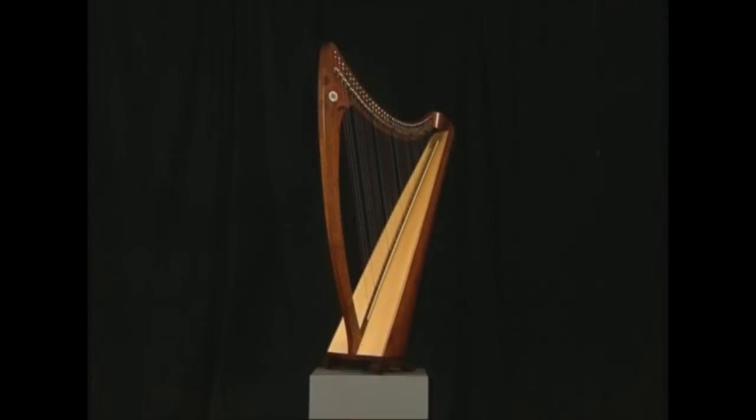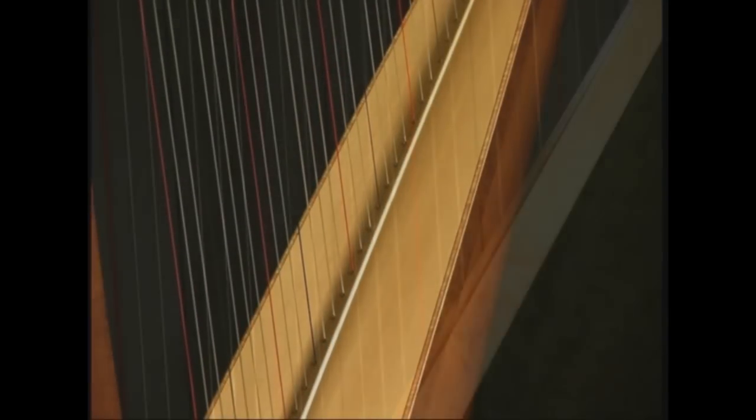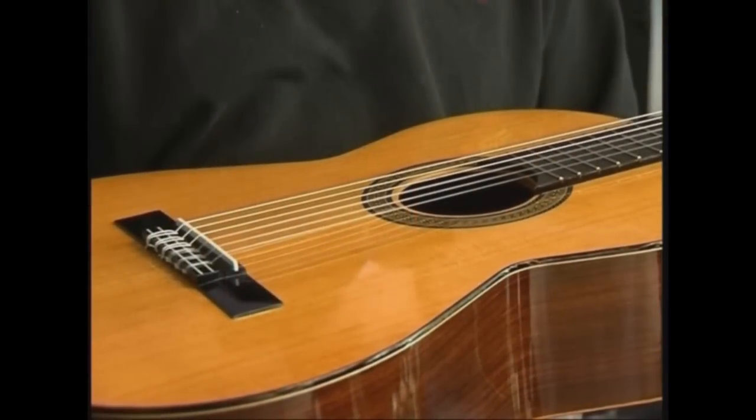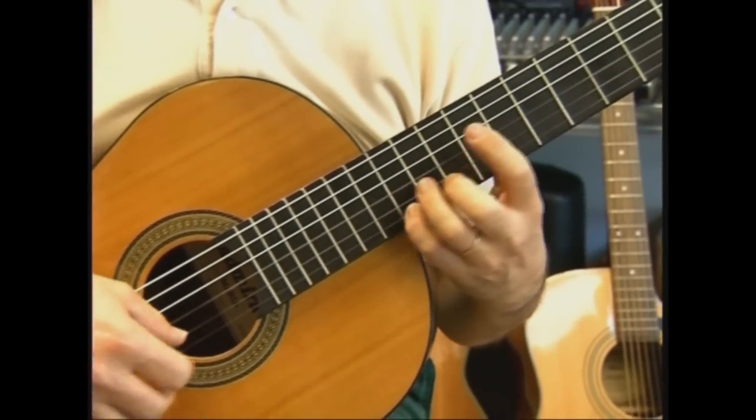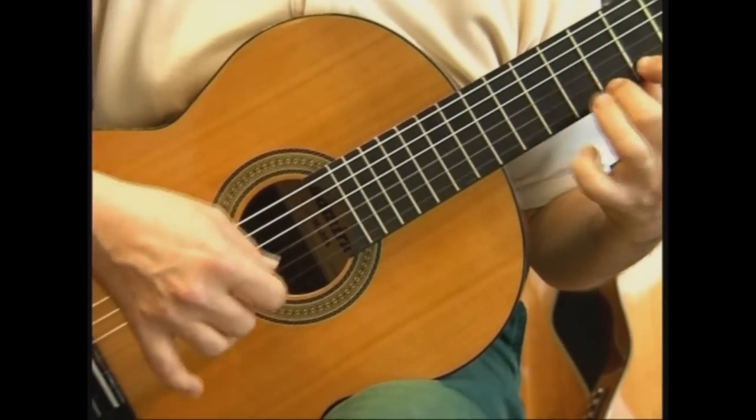The harp is a plucked string instrument which is characterized from a structural point of view by its vertically placed strings in respect to the soundboard, in contrast to other stringed instruments such as the guitar, which have strings that are positioned parallel to the soundboard.